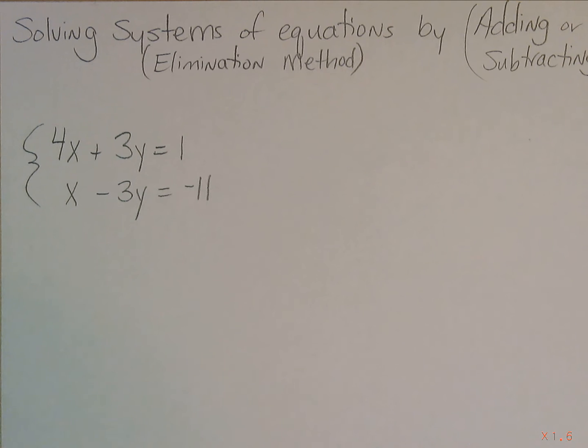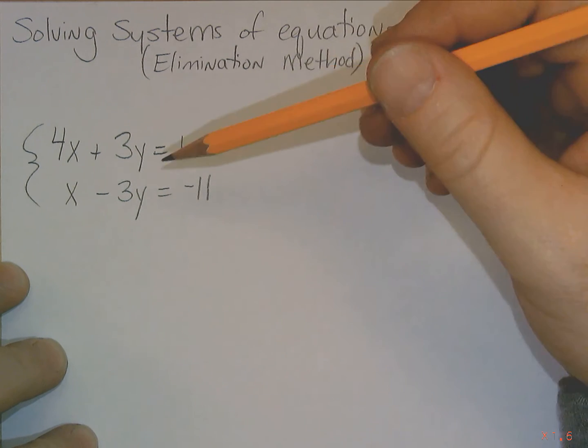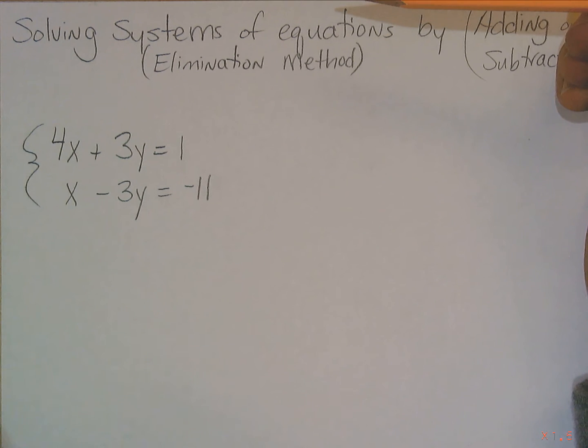If you have a system of equations which may look like this, the first thing you want to do is look at the coefficient and variable that looks very similar, or basically either exactly the same or are opposites, what we call additive inverse.